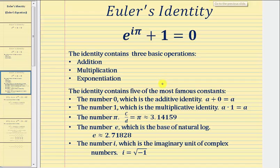The equation also contains five of the most famous constants. First, we have the number zero, which is the additive identity, meaning if we add zero to any number, we get the same number.